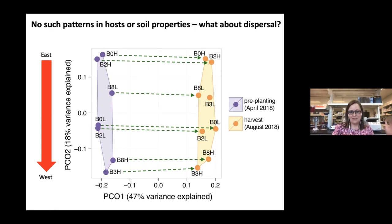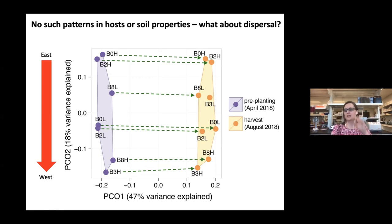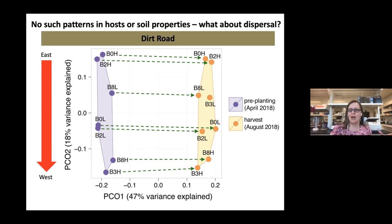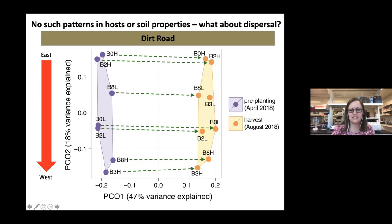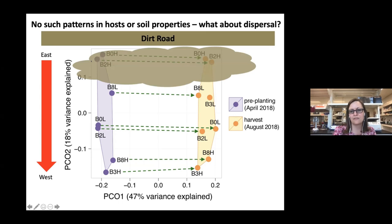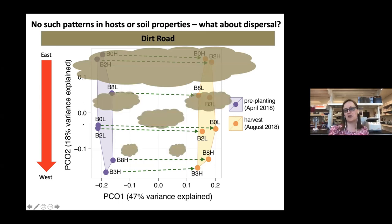This spatial pattern turned out to represent an east-to-west gradient in the field itself — viral communities closer together in space are more similar, and more distant communities are least similar. We couldn't explain this spatial pattern with host bacterial communities or soil chemistry. Our current hypothesis is that it has something to do with viral dispersal — perhaps viruses are being kicked up as dust by tractors and cars on a dirt road on one side of the field.